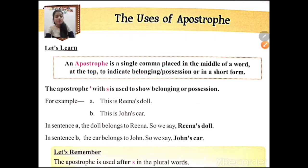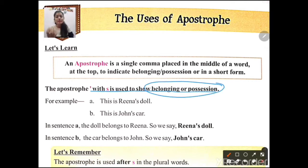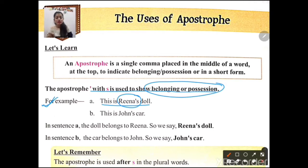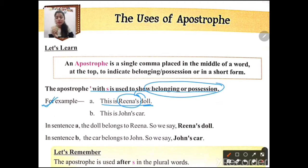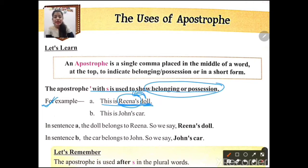An apostrophe with 's' is used to show belonging or possession — to indicate who the owner of a particular thing is. For example: 'This is Reena's doll.' Here we have placed apostrophe 's' after Reena because it shows ownership — whose doll is it? It is Reena's doll.